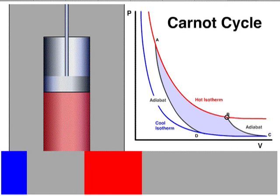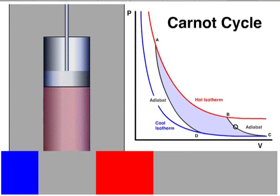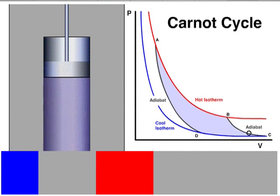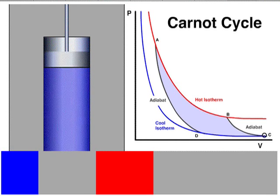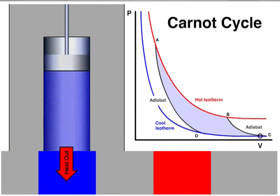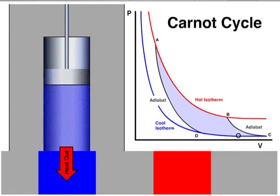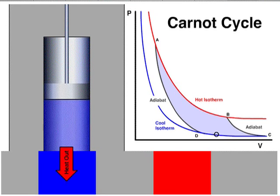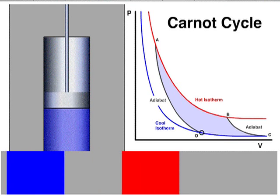While pressure is going down and volume is increasing, in the procedure from B to C, heat gain or loss is zero. Pressure is going down and volume is going up. From C to D, temperature remains constant.